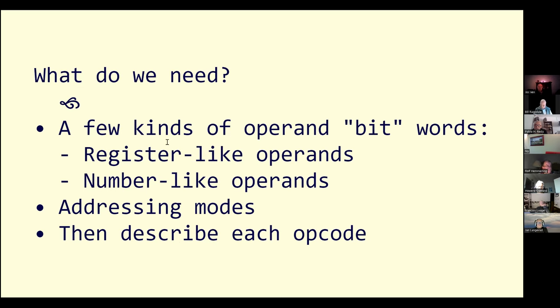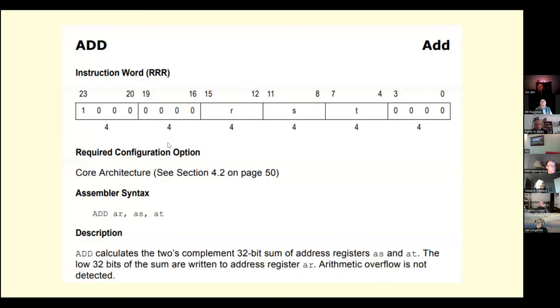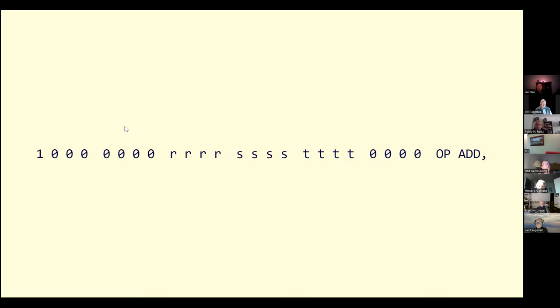So what do we need to do this? We need a few kinds of operand bits to describe things like registers and things like numbers. We might need to describe addressing modes, and then we just need to describe each opcode. Going back to the data sheet for inspiration — if I'm describing this instruction, I could describe the bits in it. To make things simpler, I'm going to use the letters L and O, which have a resemblance to one and zero, to indicate the bits. Now I've got the flexibility to make each of these things a word.